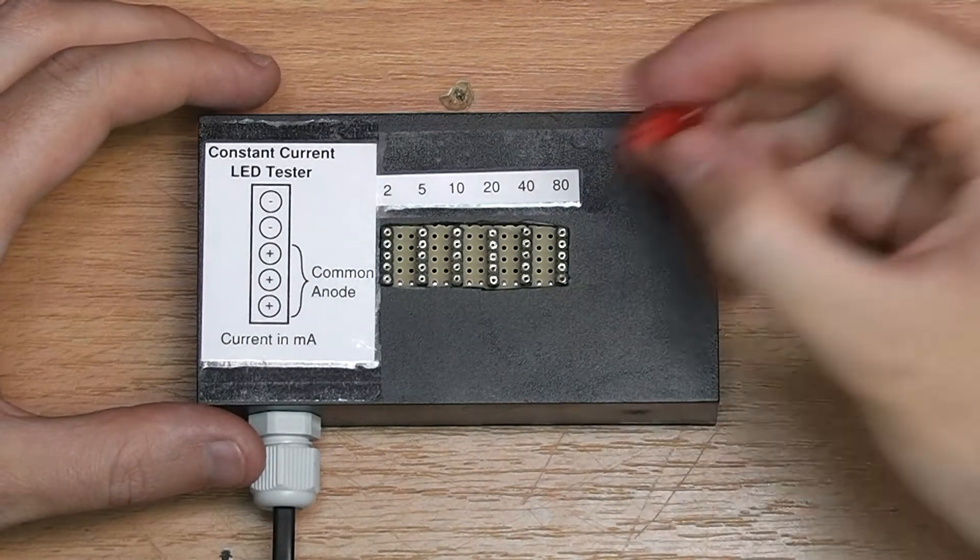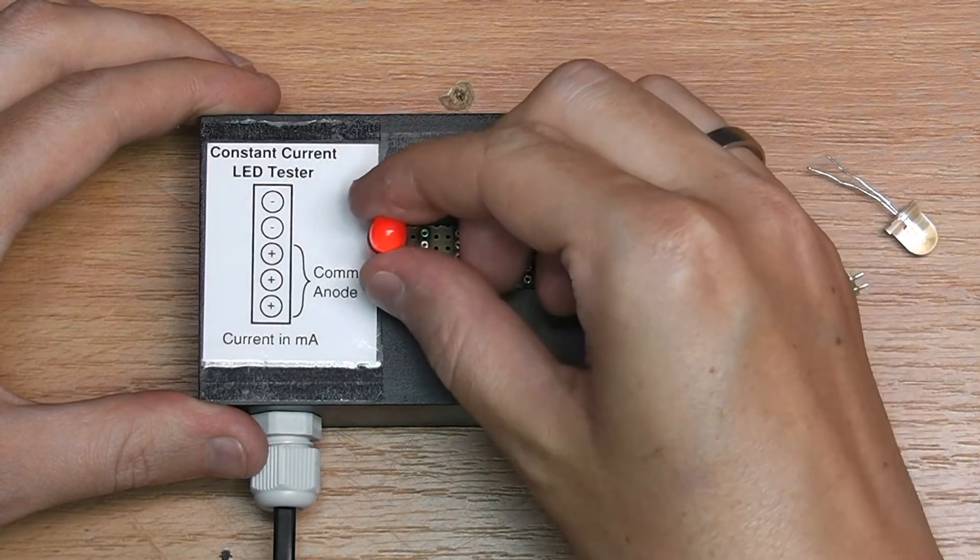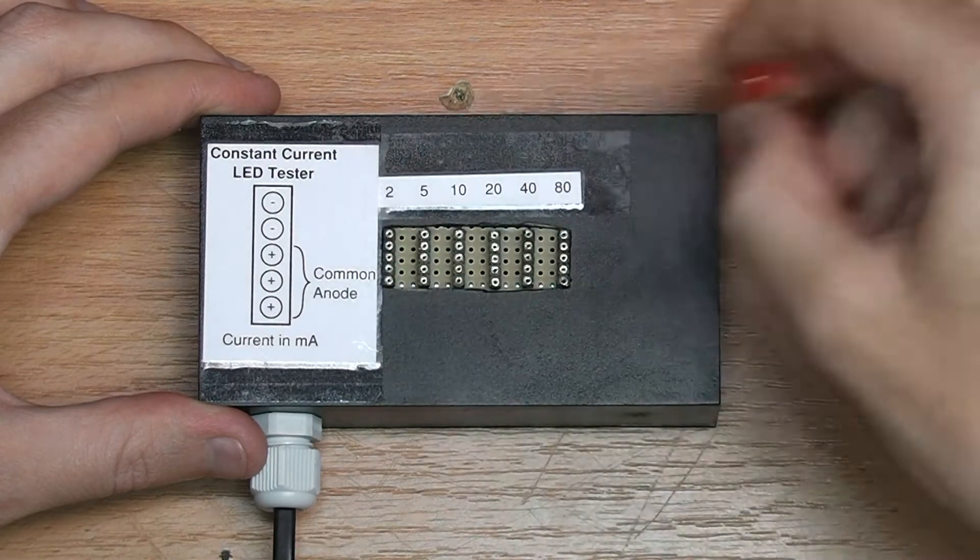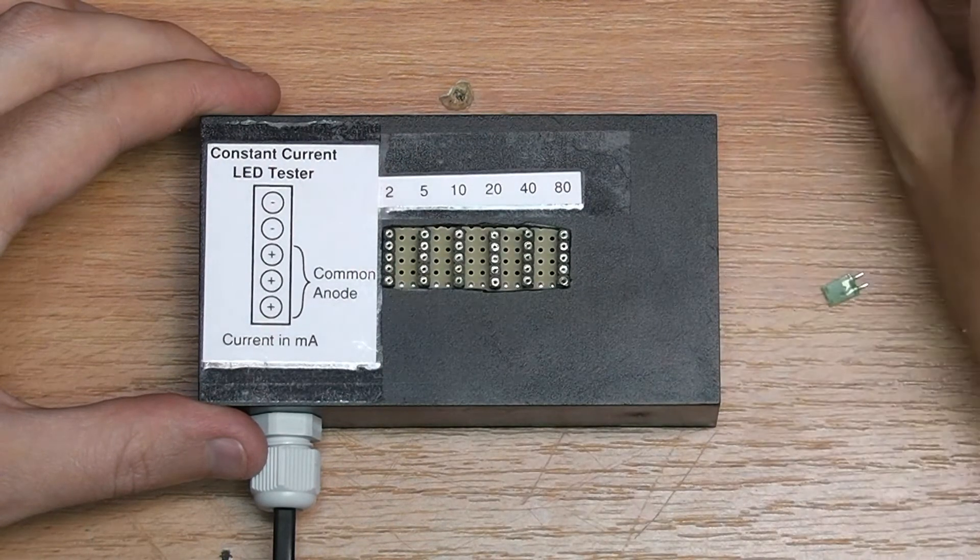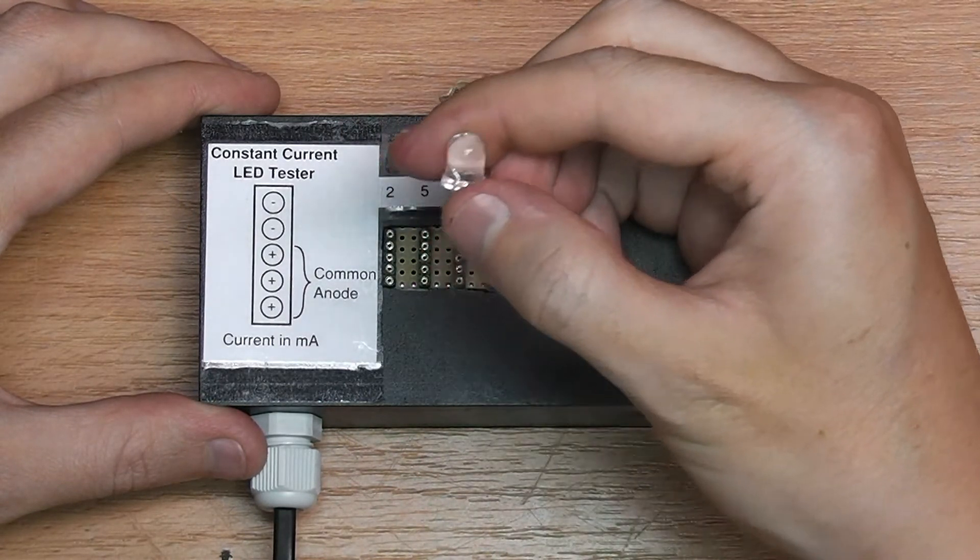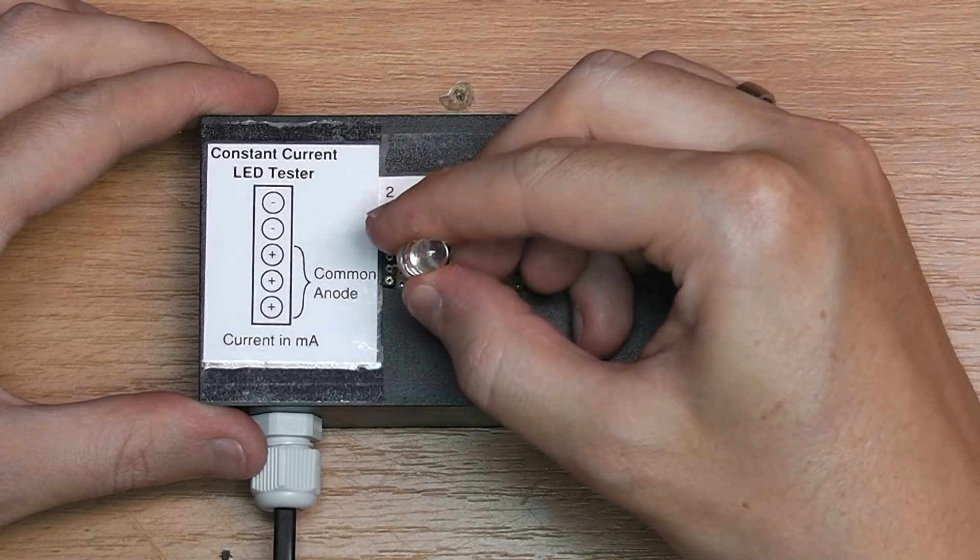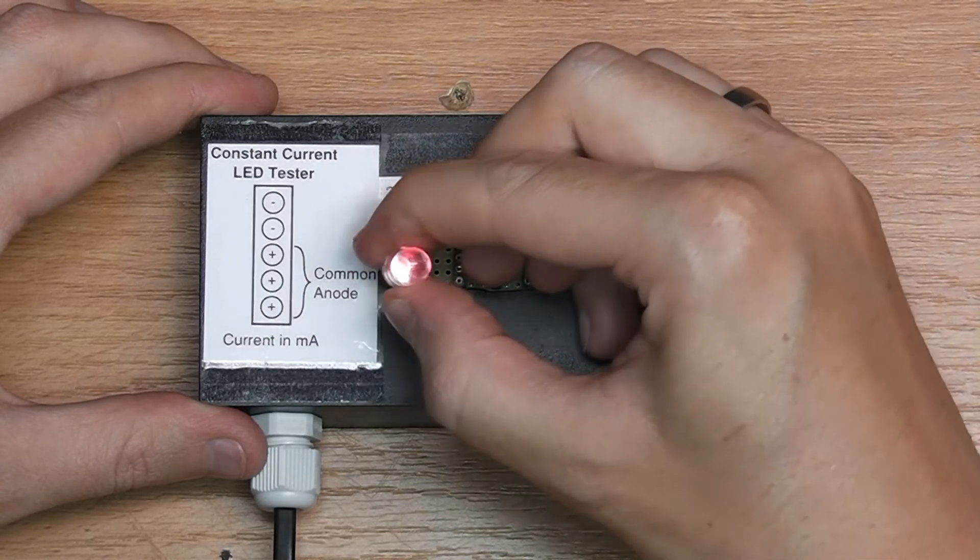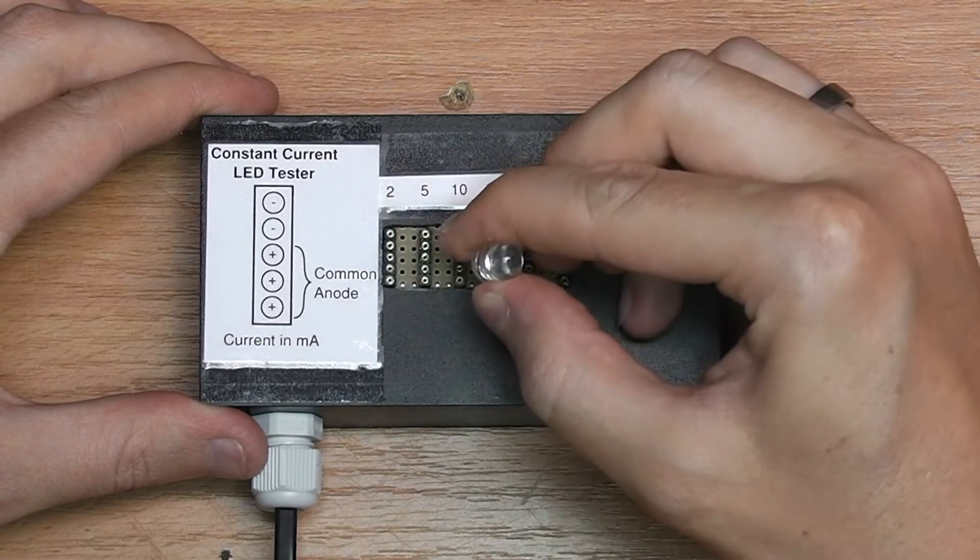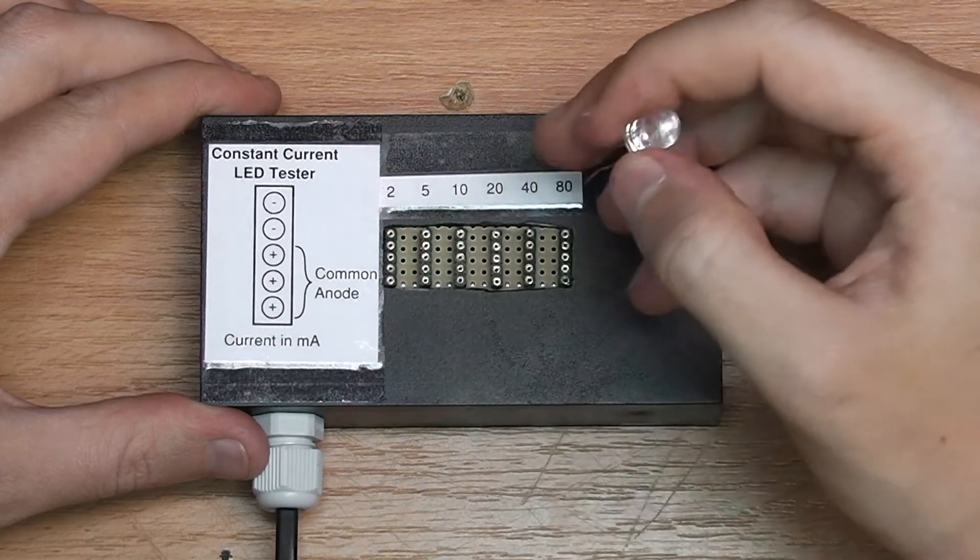Usually you will want to start from the lowest range, 2 milliamps, so I can place the LED here and you will see it light up. Some LEDs for example this one, it's clear, I cannot tell the color just by looking at the LED itself. So again I'll just place it in here, I'll see it's a red one, and now I can vary the current by just placing it in the appropriate spot until I hit the right one.